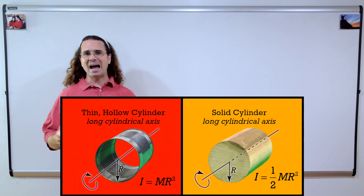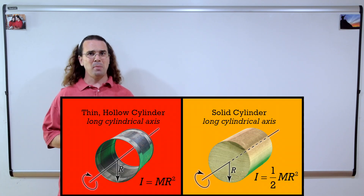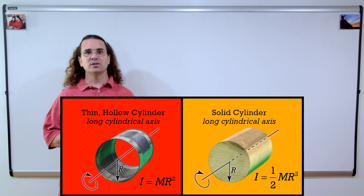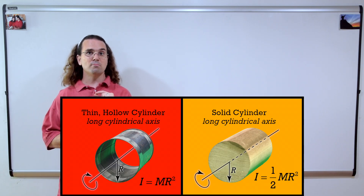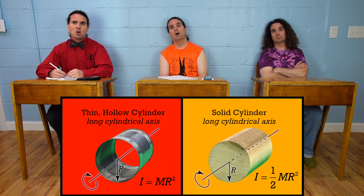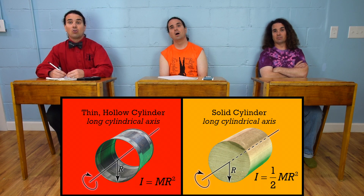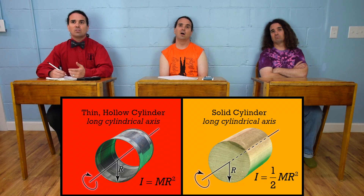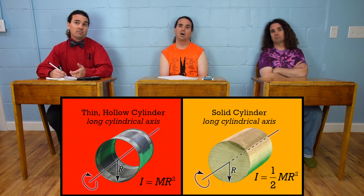Notice neither of these two moment of inertia equations depends on the length of the cylinder. In other words, the length of the cylinder is irrelevant for moment of inertia about the long cylindrical axis. That means the equation for the moment of inertia of a solid disk is the same as for a solid cylinder, and the equation for a thin hollow cylinder is the same as for a thin ring. The length does not affect where the pieces of the rigid objects are relative to the axis of rotation.